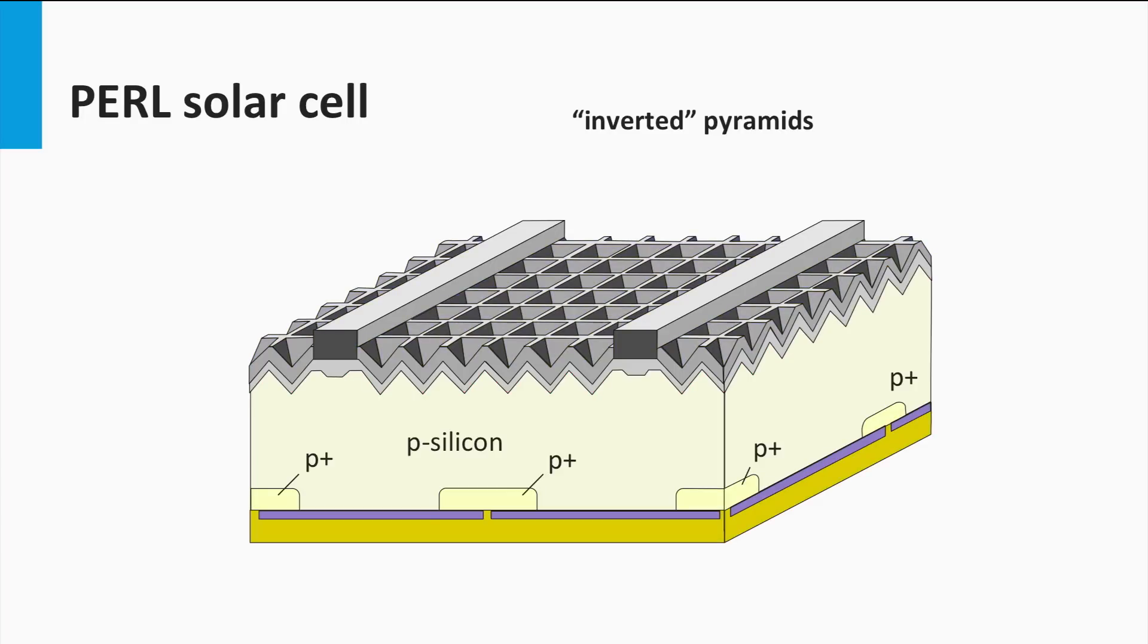At the rear surface of the solar cell, point contacts have been used in combination with thermal oxide passivation layers. The oxide operates as a passivation layer of the non-contacted area to reduce the unwelcome surface recombination.